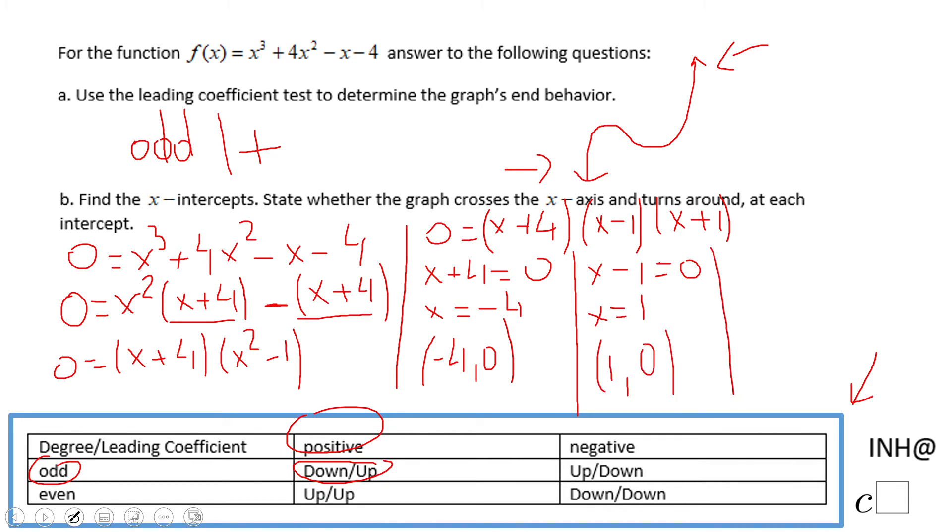Similarly we have a last factor, x + 1 = 0, which is going to give us x = -1, or the intercept (-1, 0).